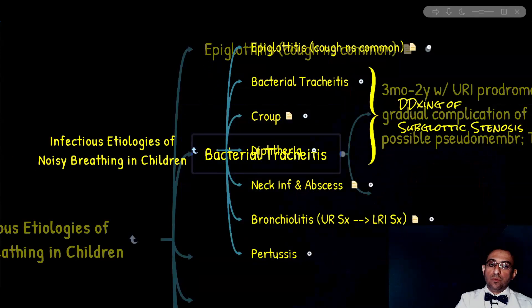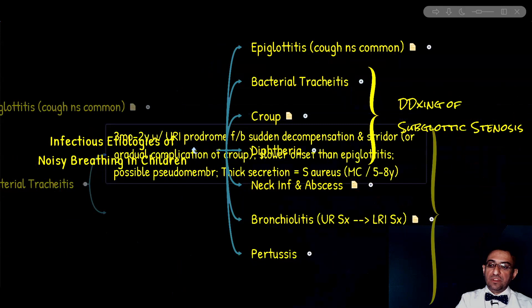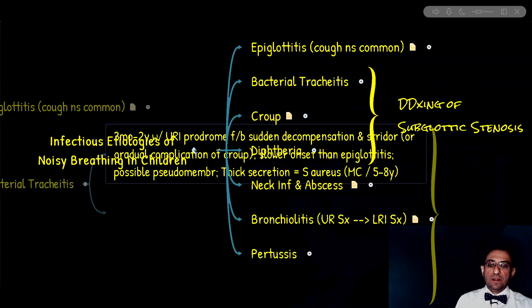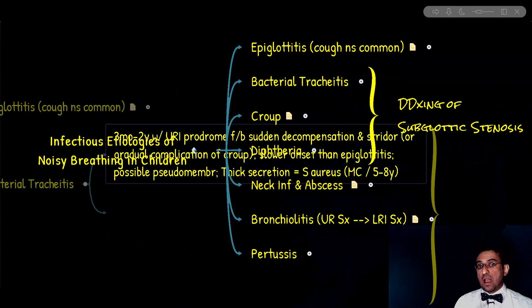First question: what are the clinical presentation or signs and symptoms of bacterial tracheitis? A young child — almost the same age group as croup, that's three months to three years for croup and three months to two years for tracheitis — has an upper respiratory prodrome, but this is followed by sudden decompensation and stridor.